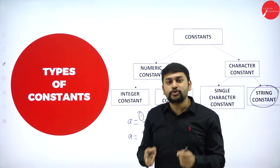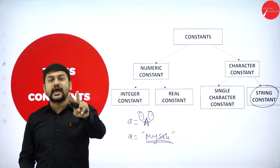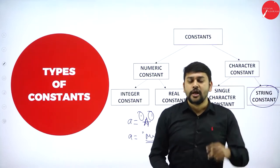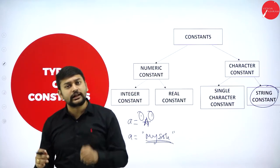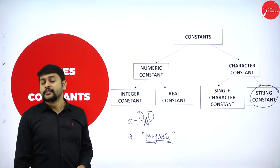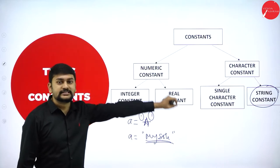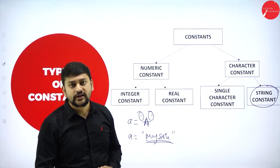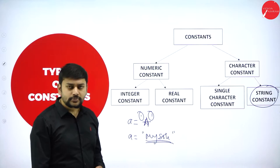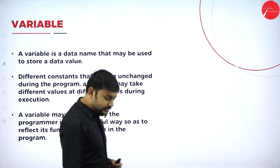Let me recap the concept of constants. We have two major categories: numeric constant and character constant. Under numeric constants, we have two types: integer and real constants. Under character constants, we have two types: single character constant and string constant. This is a very important thing you should know when it comes to constants.